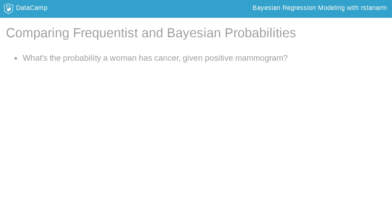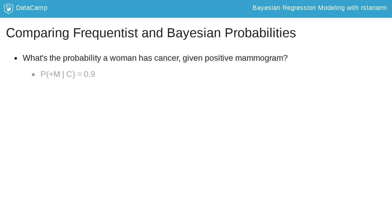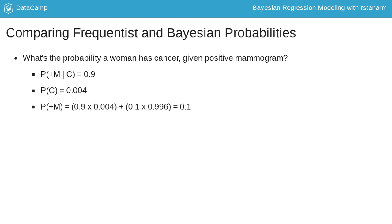To illustrate, let's calculate the probability of a woman having cancer given a positive mammogram. We know that if a woman has cancer, they will have a positive mammogram 90% of the time. This is like the p-value — the probability of our data given a null hypothesis. We also know that in the United States, 0.4% of women have breast cancer. This is what we will later call our prior, or our belief about the parameter before looking at the data. From this, we can calculate that the probability of a random woman getting a positive mammogram is 10%.